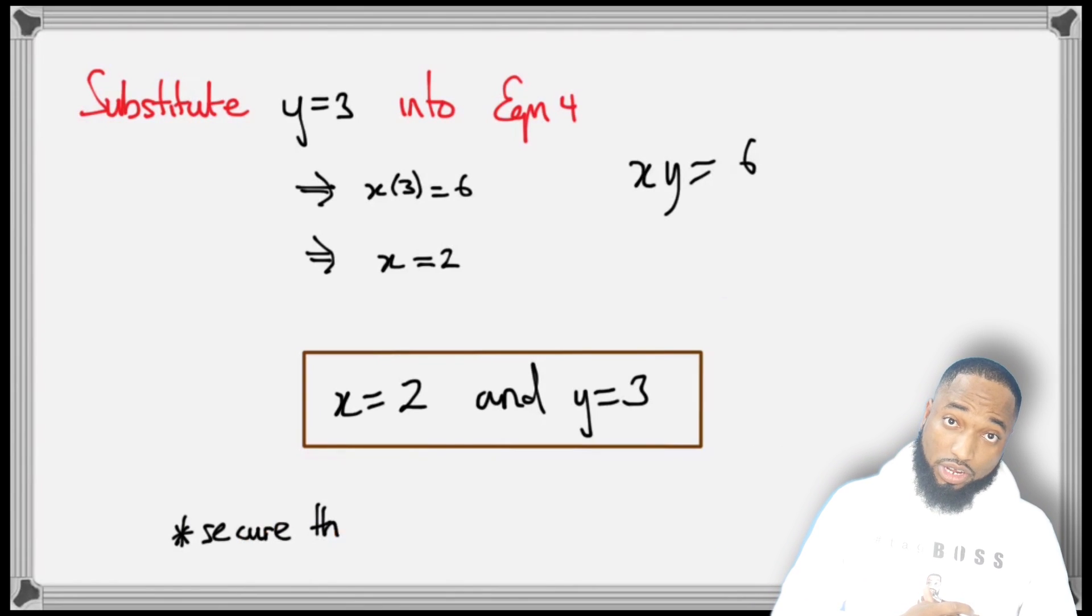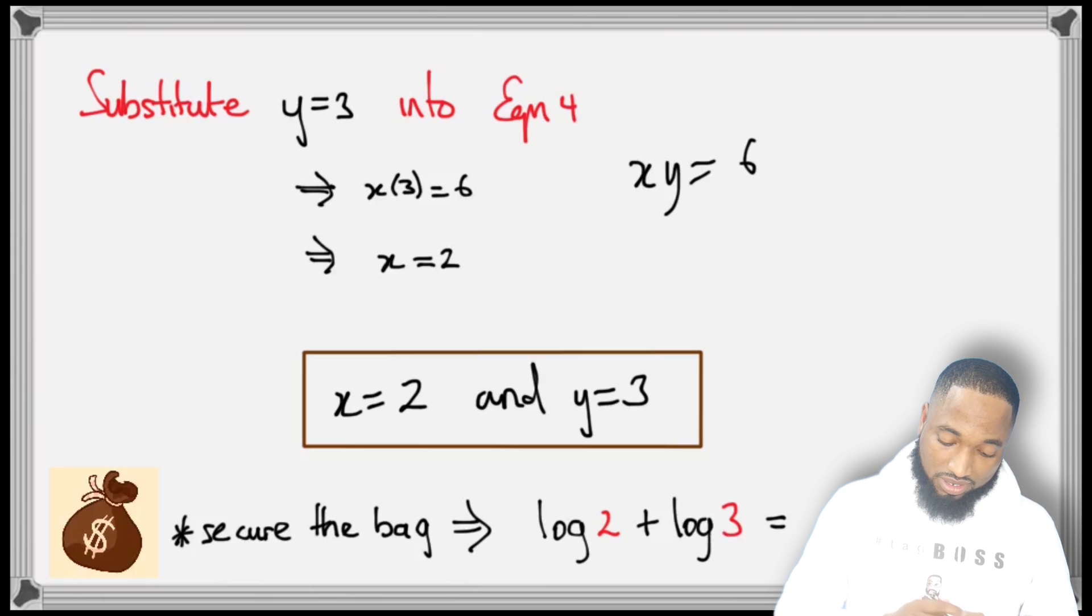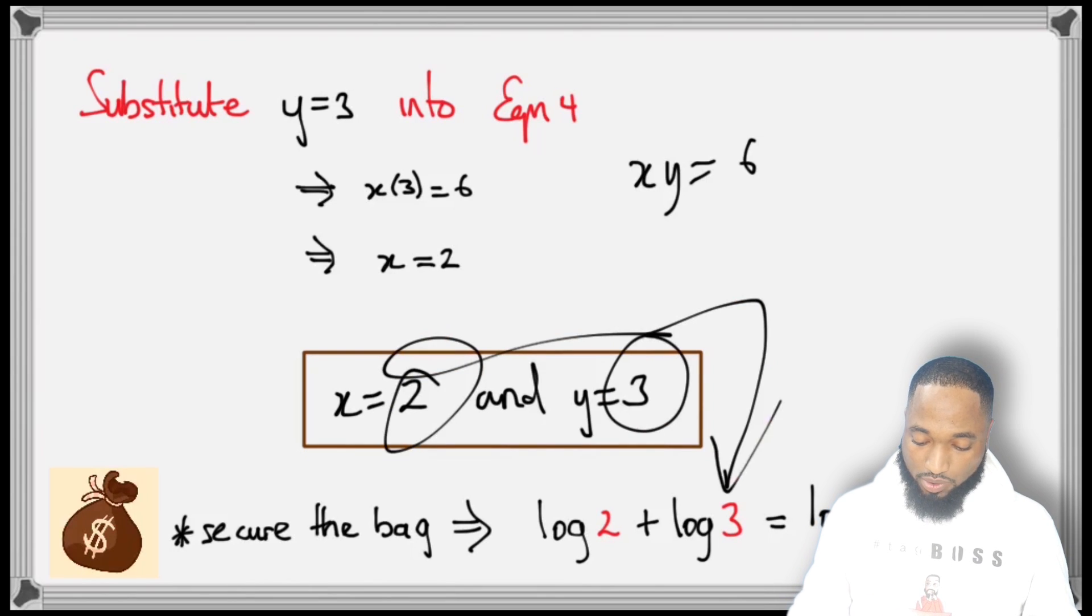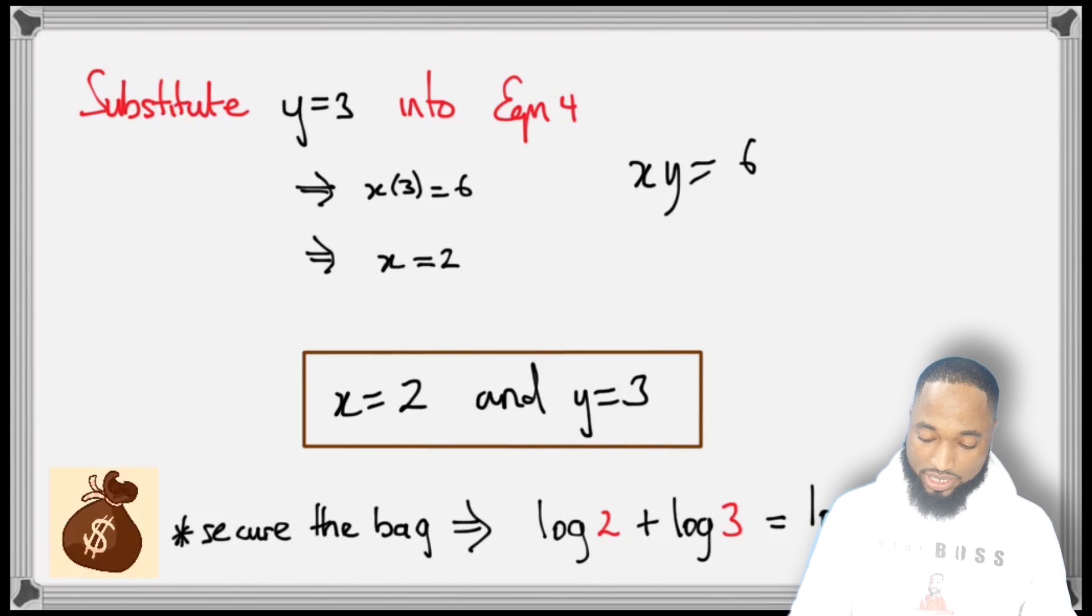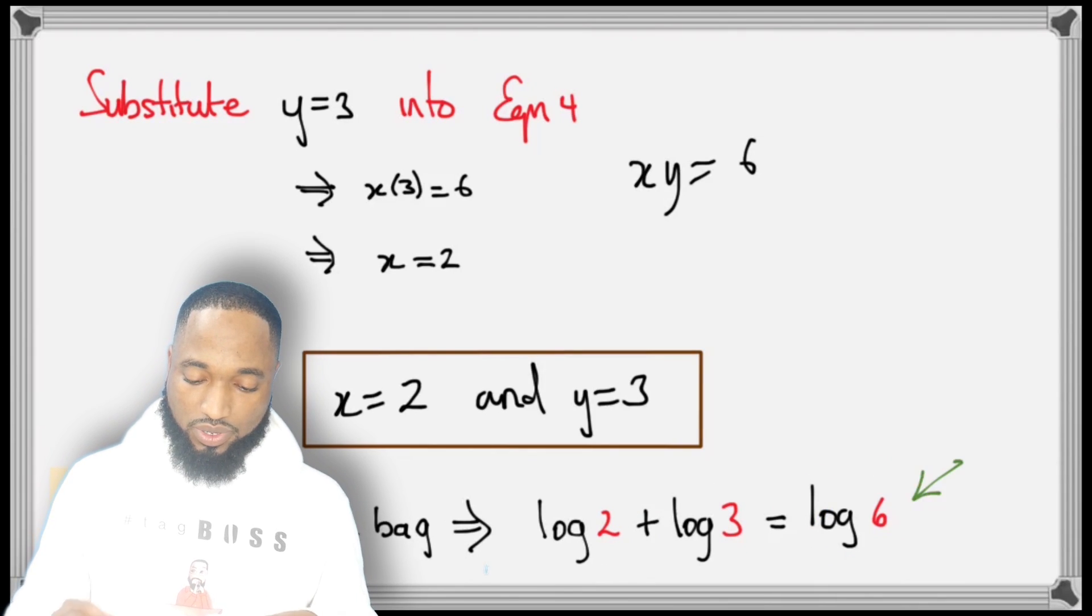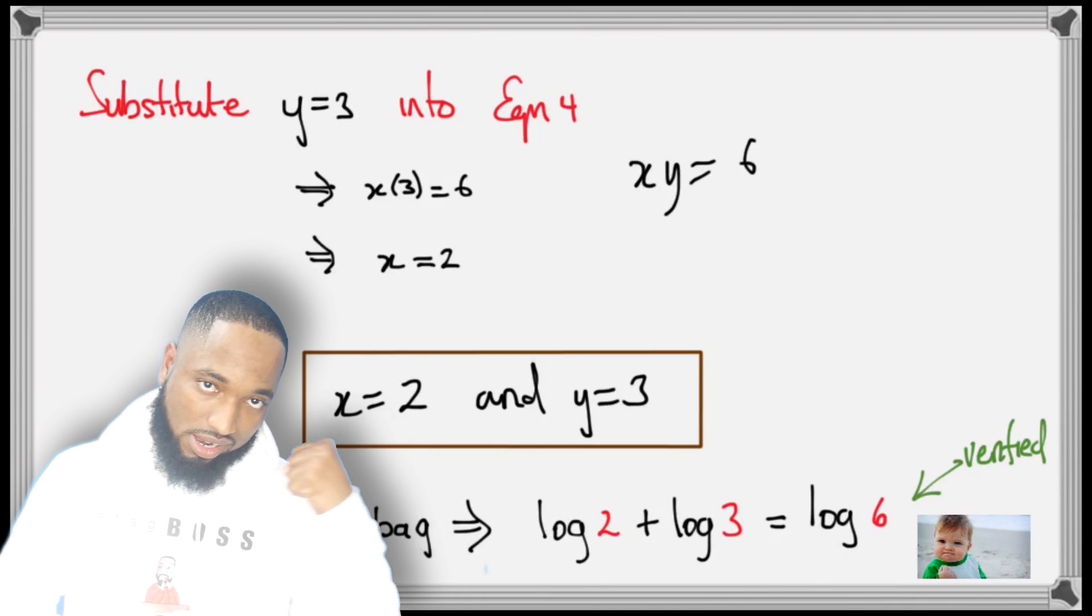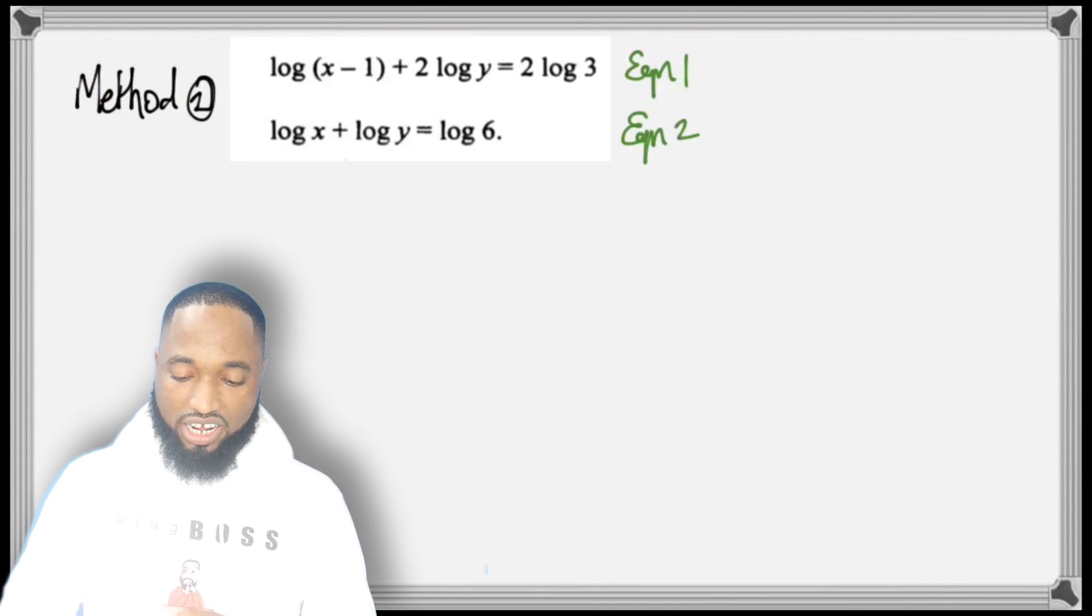Now don't forget to secure the bag. Substitute back the values you get here into one of the original equations and just make sure it makes sense. Type it in your calculator. This is very easy to see that log 2 plus log 3—that's log of 2 times 3, which is log 6—this would equal that, so we're good to go.